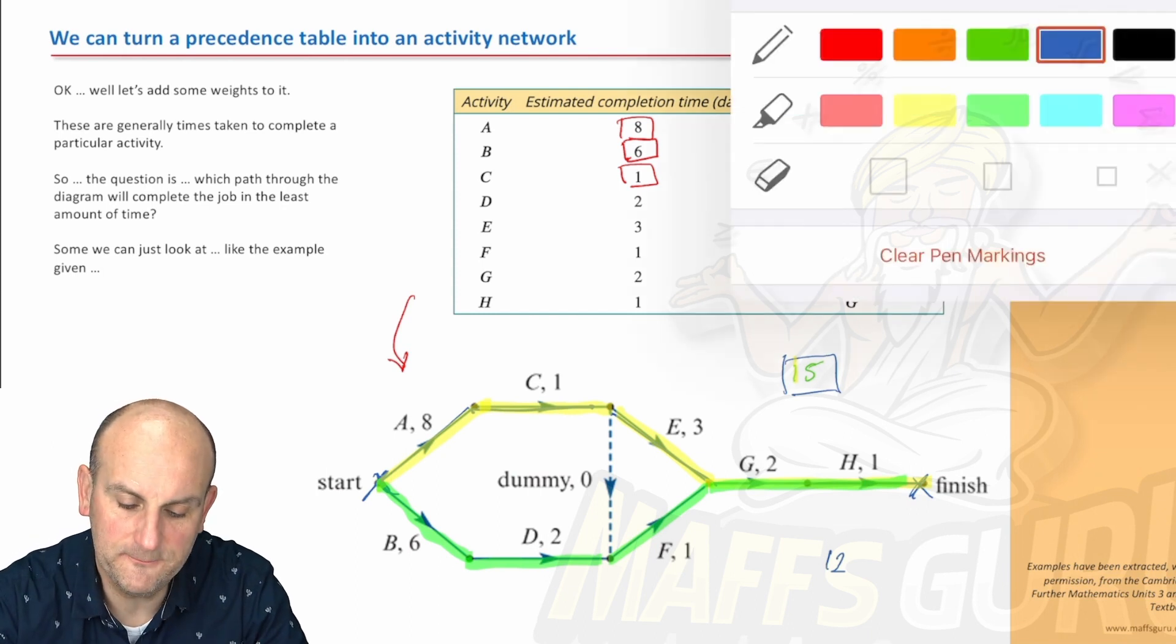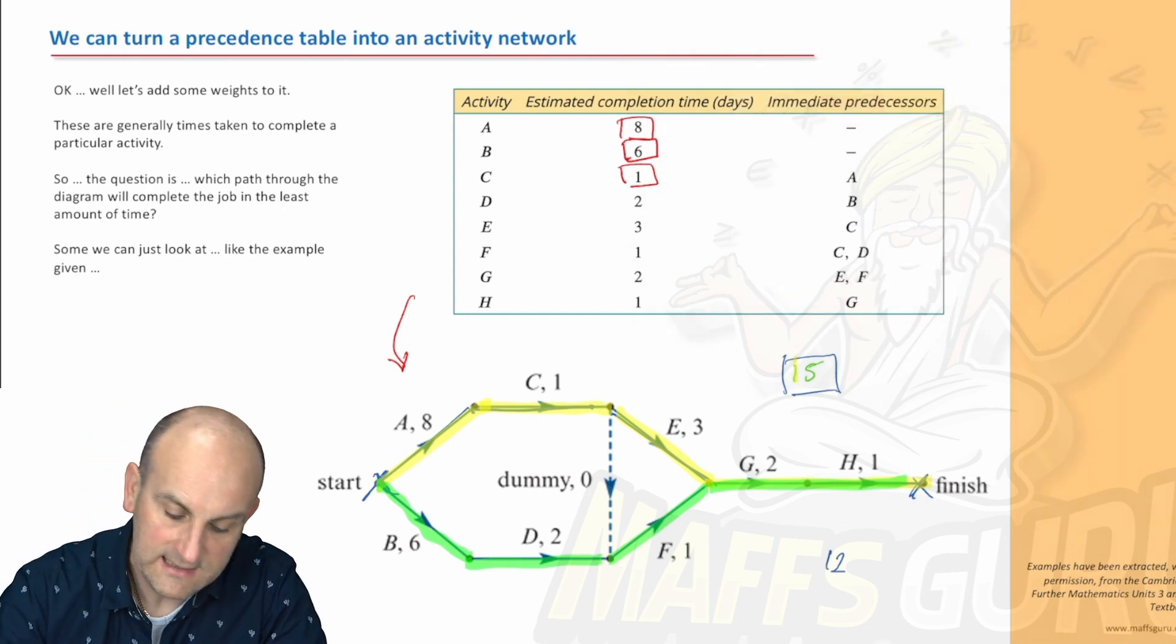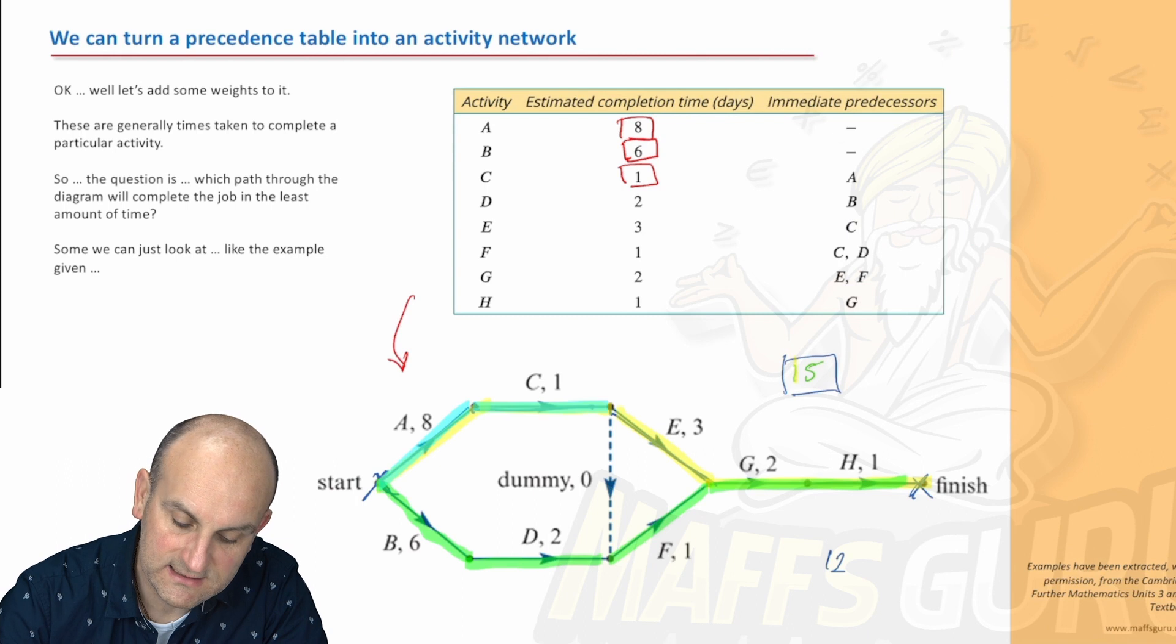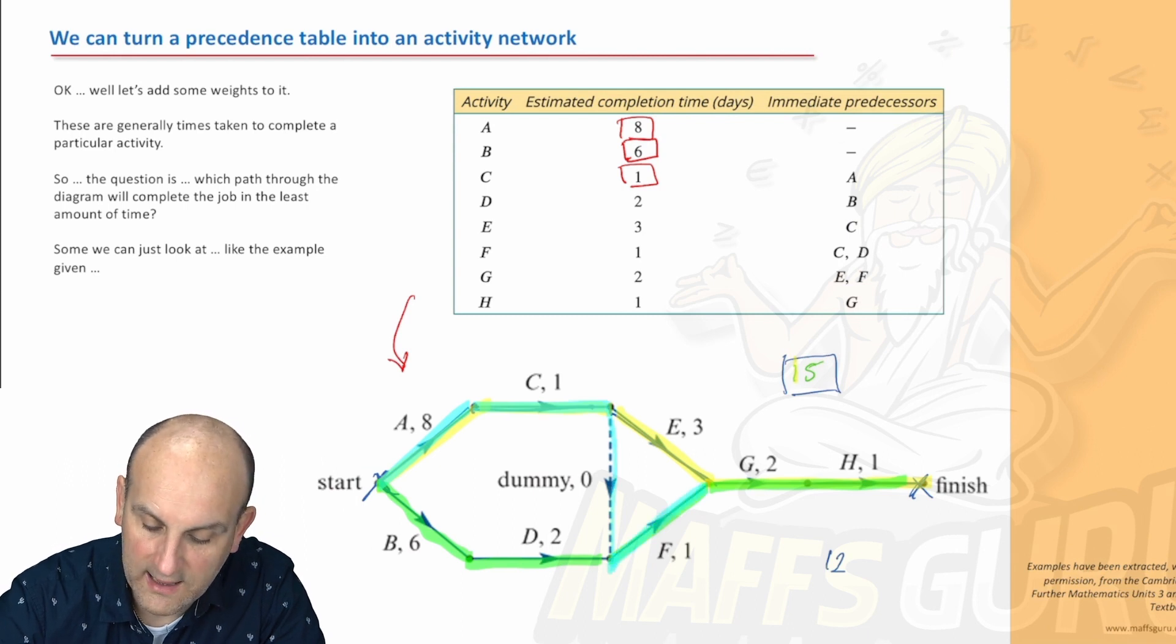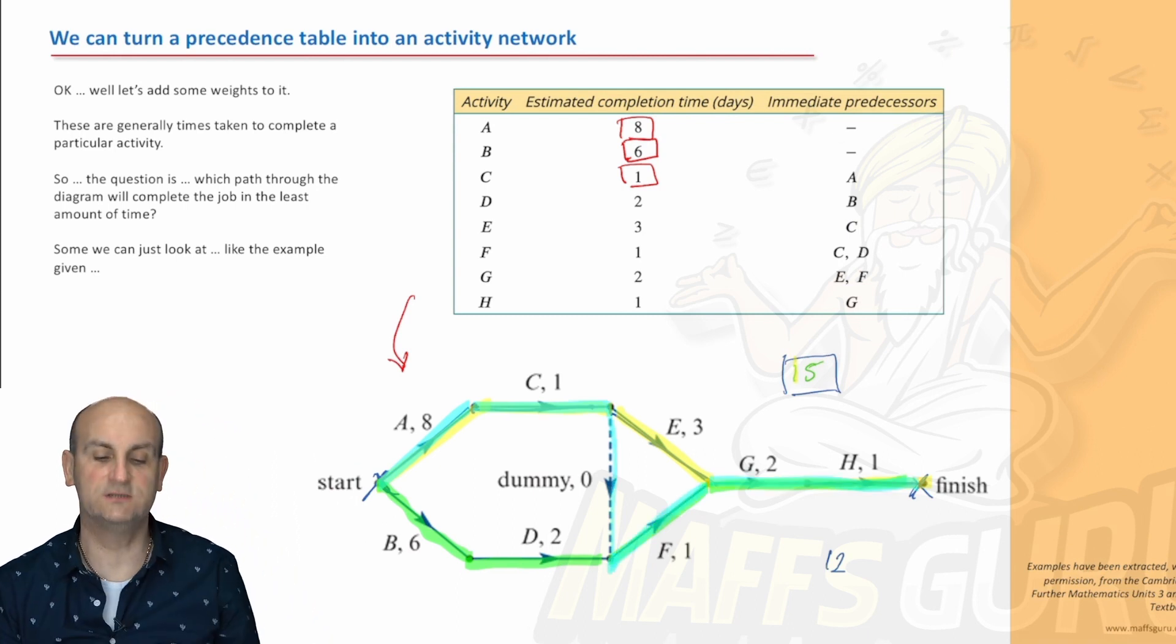And for those of you who are looking, yes, you could also go A to C down the dummy along F and through G and H. So there are three ways through that. Now, again, this isn't the easiest one to do.